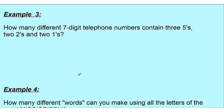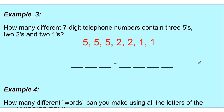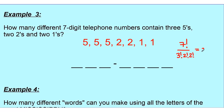Here's a variation: how many different seven-digit telephone numbers contain three 5's, two 2's, and two 1's? We have seven numbers filling seven spots, so there are 7 factorial arrangements. But we have repetitions: three 5's give 3 factorial, two 2's give 2 factorial, and two 1's give 2 factorial. So the answer is 7 factorial ÷ (3 factorial × 2 factorial × 2 factorial) = 5040 ÷ 24 = 210 different ways.